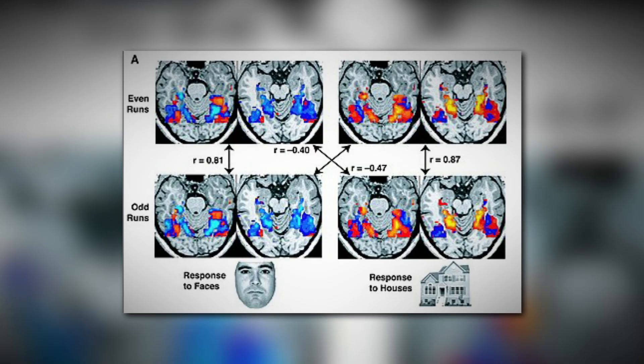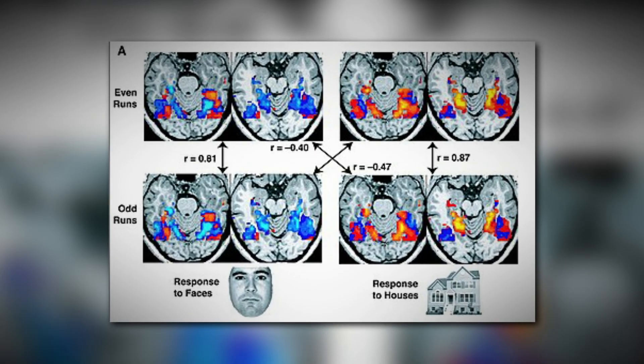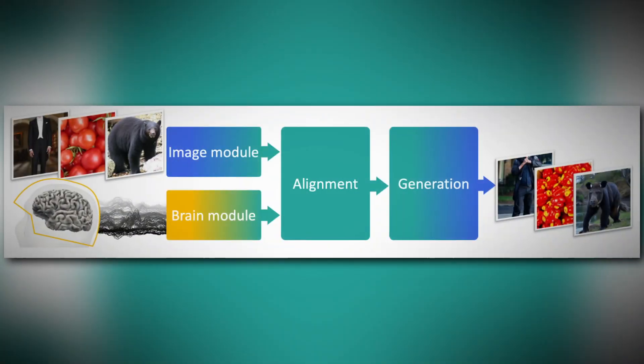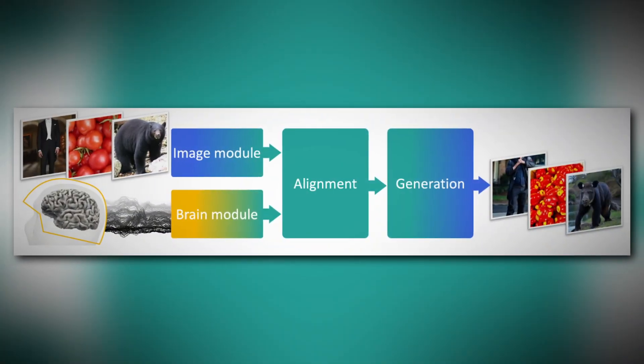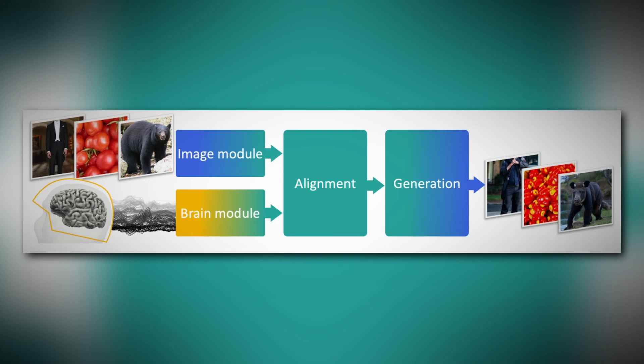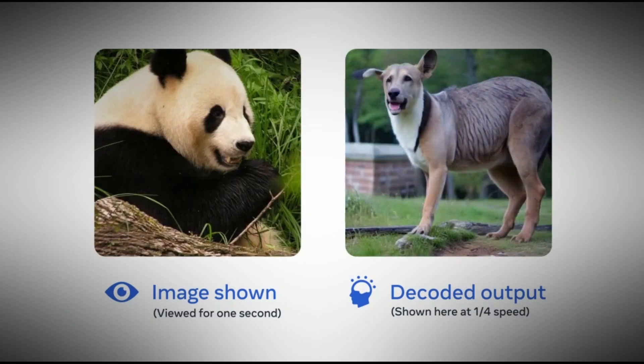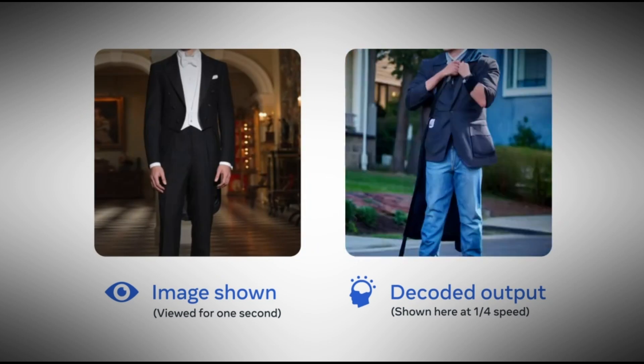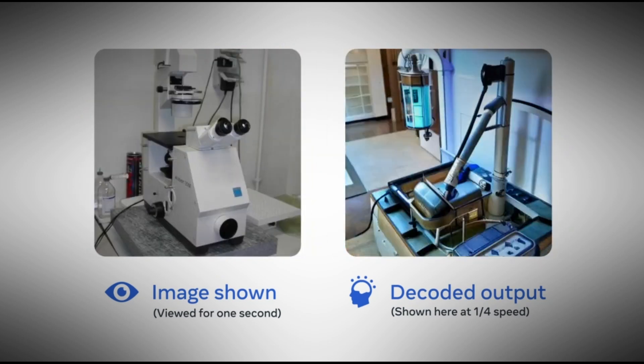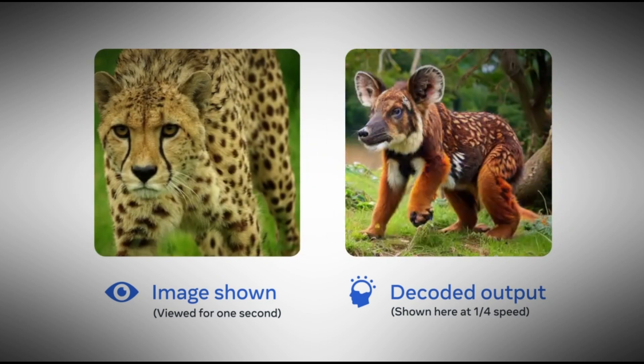Instead of using fMRI, which has a resolution range of one data point every few seconds, Meta used MEG technology, another non-invasive neuroimaging technique that can take thousands of brain activity measurements per second. Making use of this technology, they developed an artificial intelligence system proficient in deciphering visual representations within the brain.